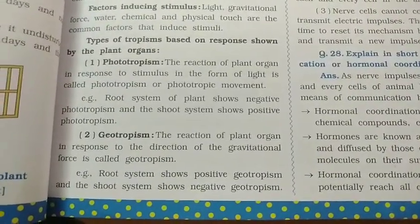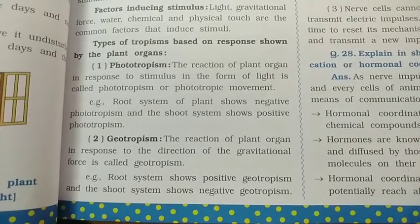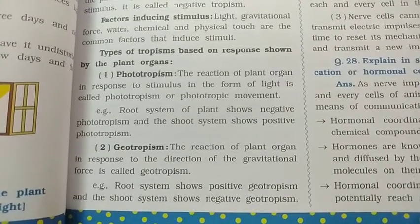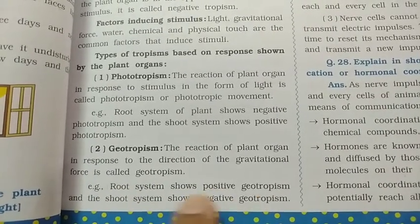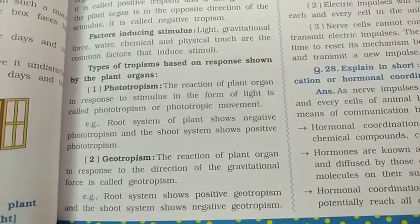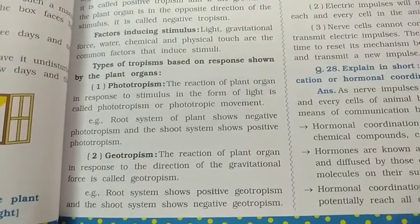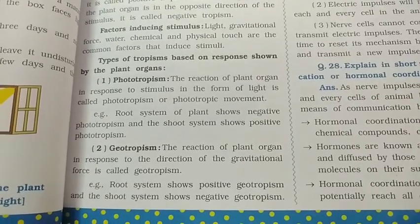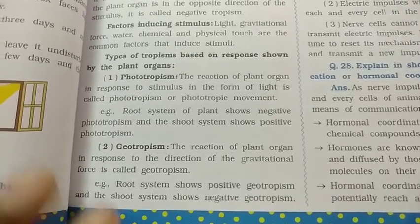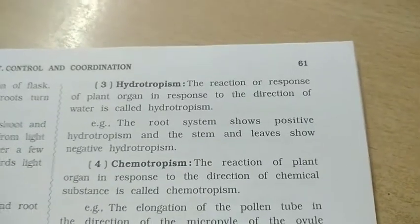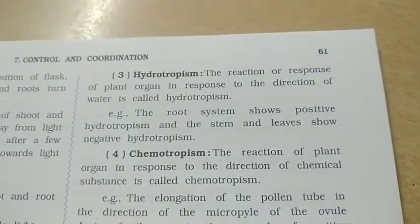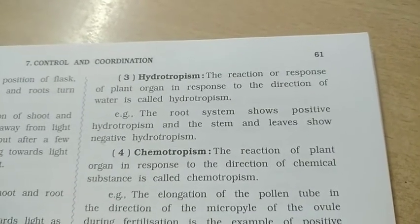In geotropism, the root grows in the direction of gravitational force, so the root shows positive geotropism. The root grows downward in response to gravity, making it a positive geotropic reaction.